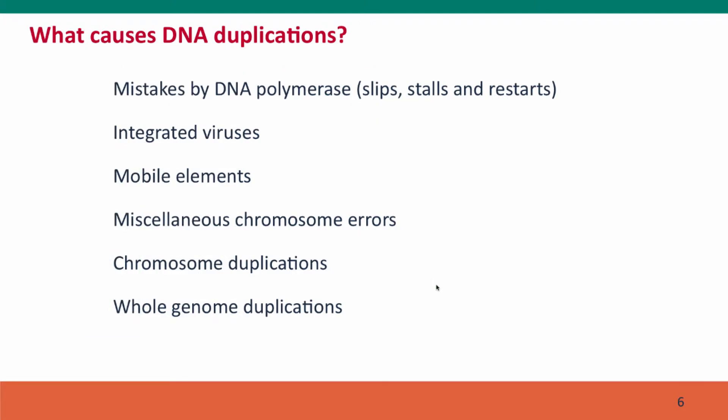What kinds of events can cause this? Well, mistakes by DNA polymerase, especially if there are repeated sequences in the neighborhood — DNA polymerase can lose track of where it was and start in a new place. If the new place it starts at is behind where it already was, this can result in duplication of a segment. Viruses and genetic parasites, such as mobile elements, can also cause duplications when their insertion mechanisms go wrong. Many other chromosome errors can also cause duplications, as can whole chromosome duplications that arise through mistakes in cell division, and whole genome duplications that arise in other kinds of cell division.